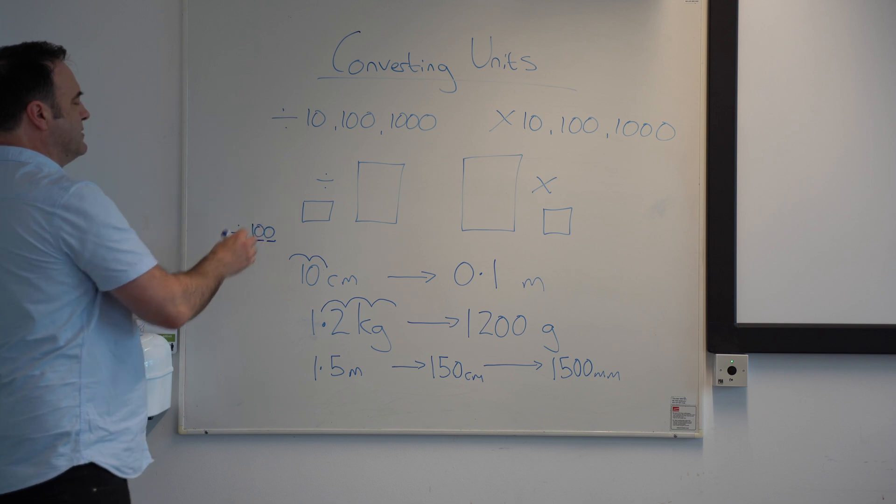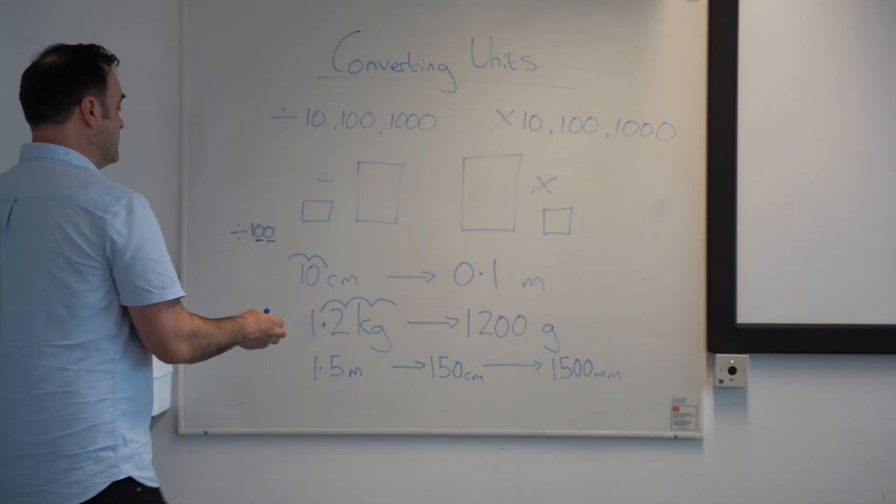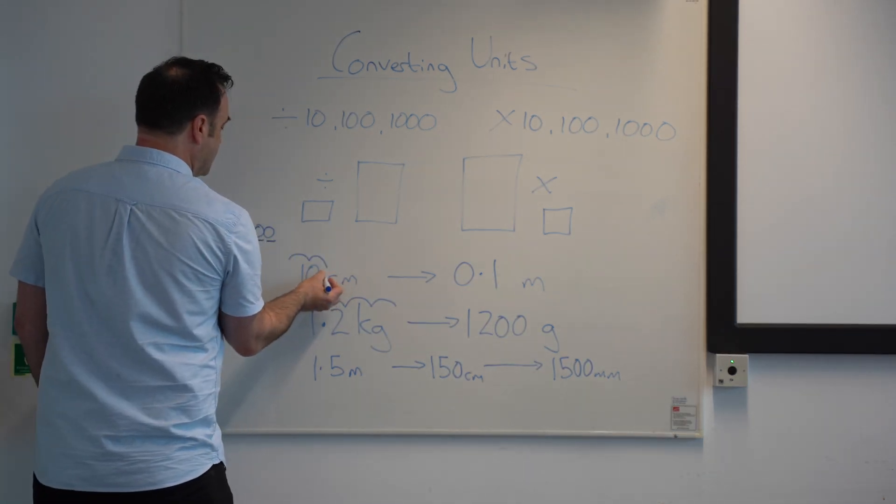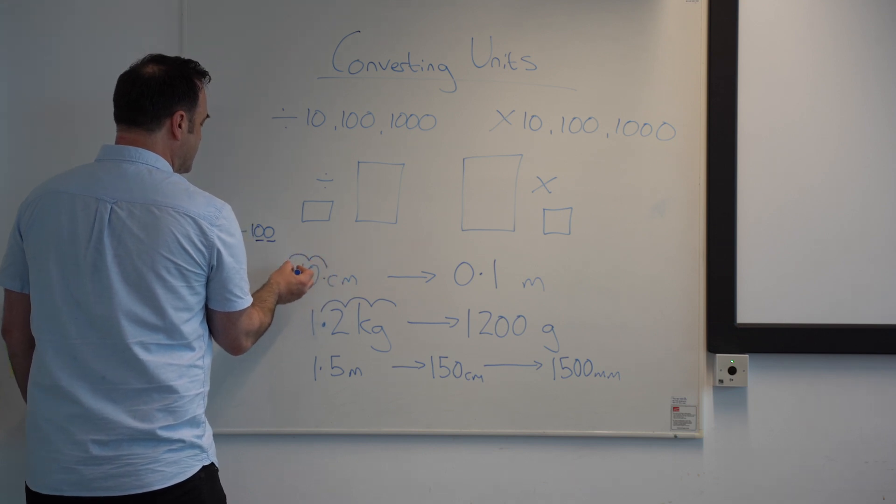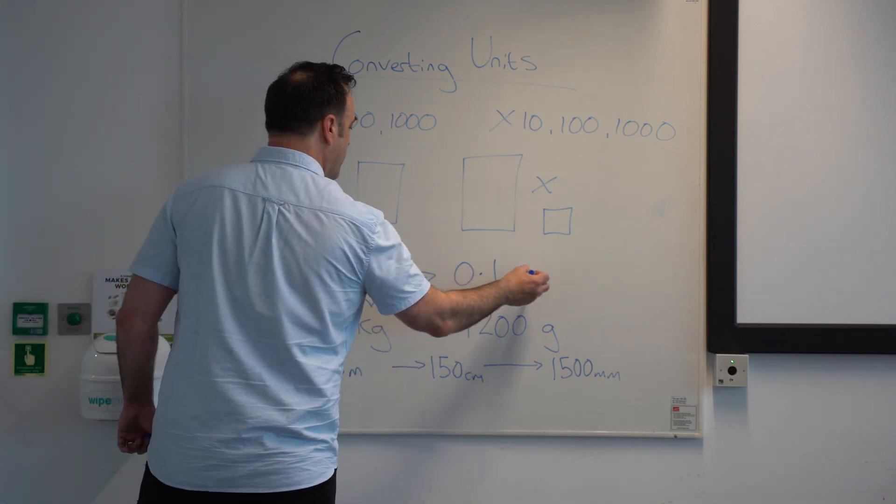Underline the zeros, there are two zeros, so there are two jumps in the decimal. So with a whole number, the decimal will be here, we jump that two positions, so you end up with 0.1 metres.